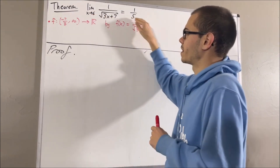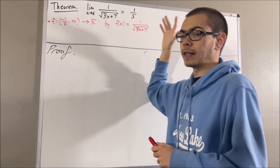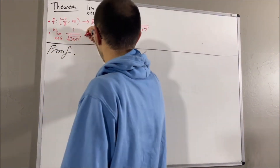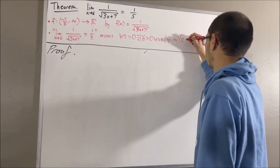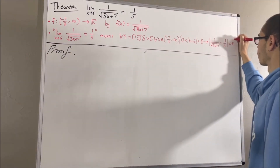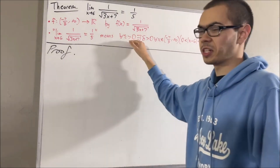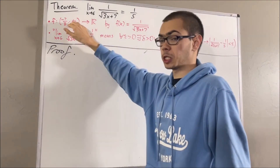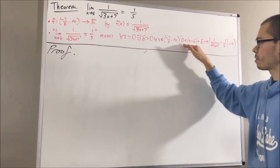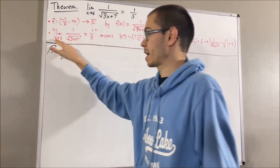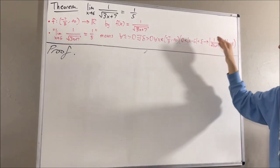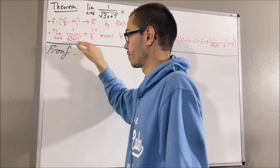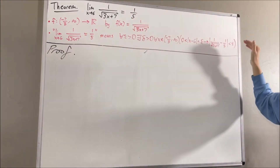But what does this mean? By the epsilon-delta definition of a limit, this means the following: for every epsilon greater than 0, there exists a delta greater than 0, such that for all x in the domain of our function, if 0 is less than the absolute value of x minus 6 is less than delta, then the absolute value of 1 over the square root of 3x plus 7 minus 1 fifth is less than epsilon.